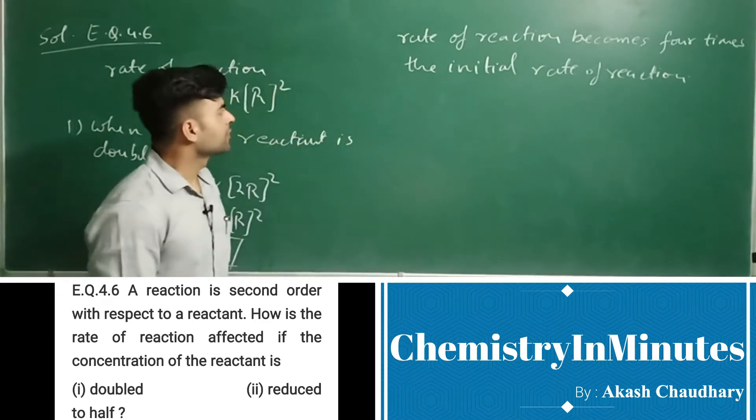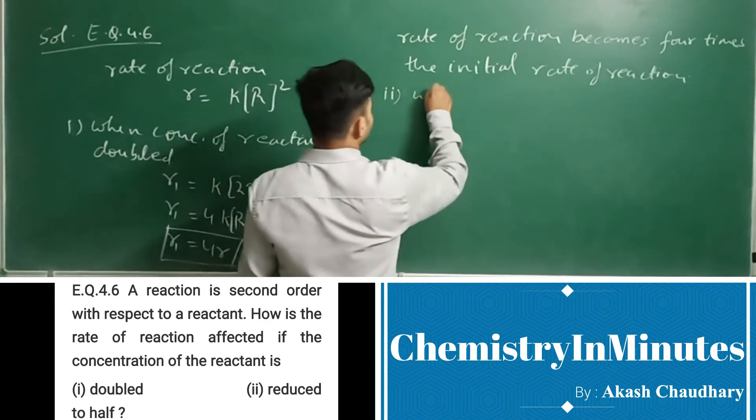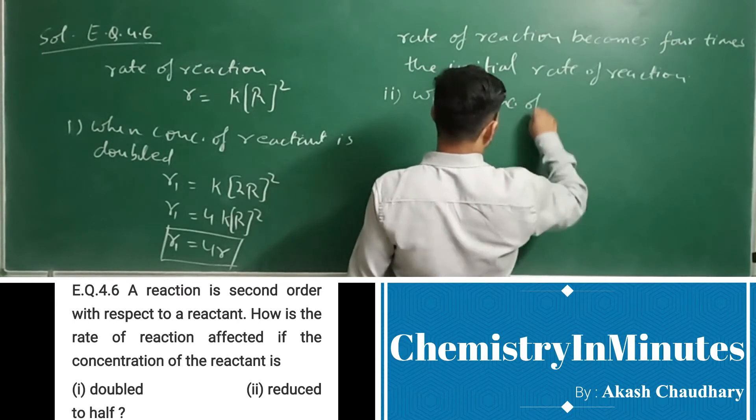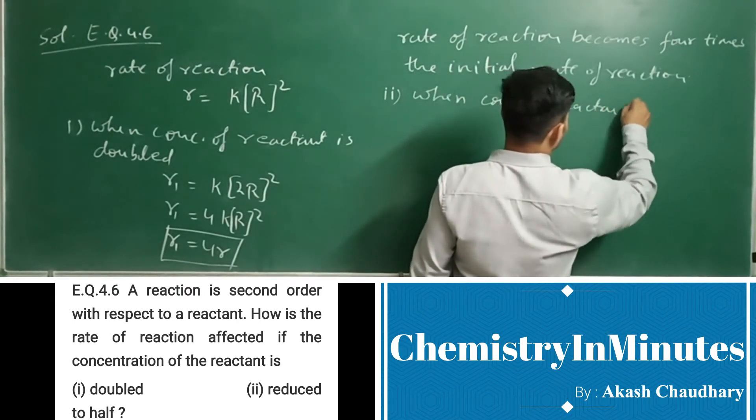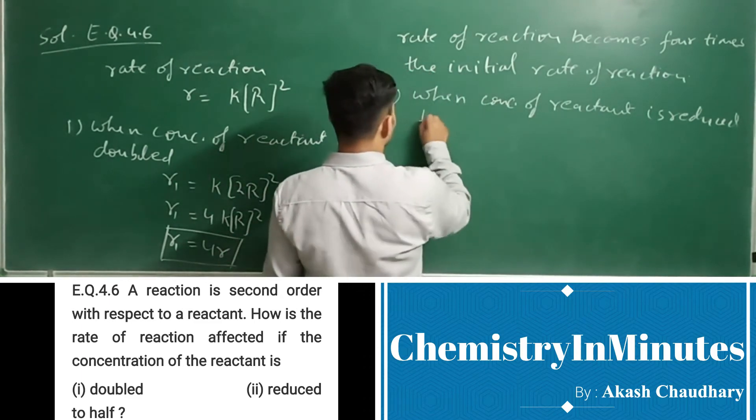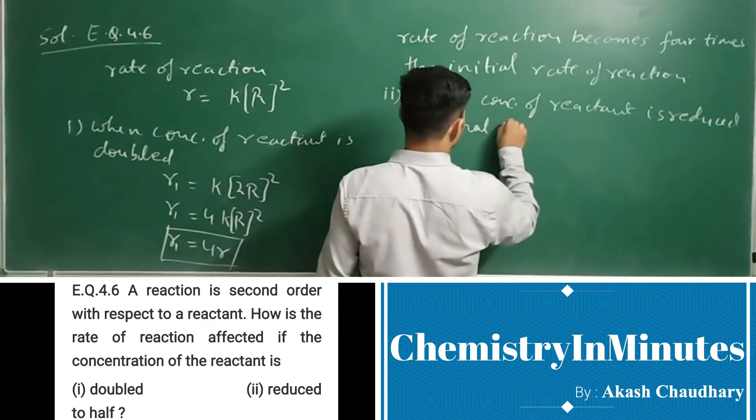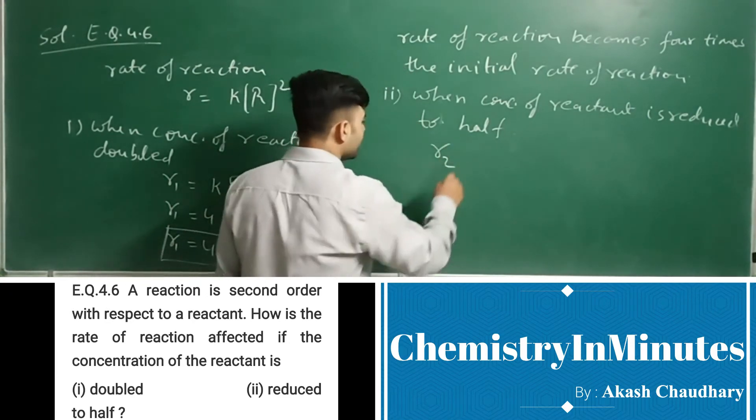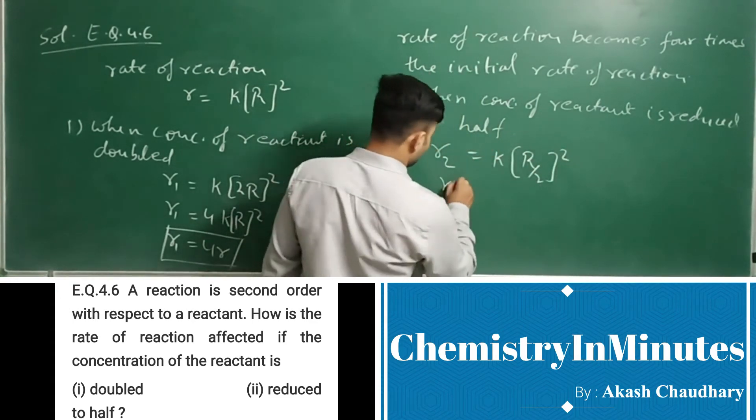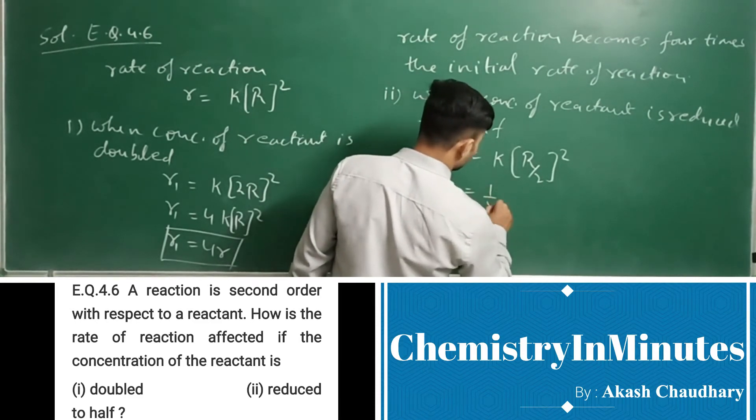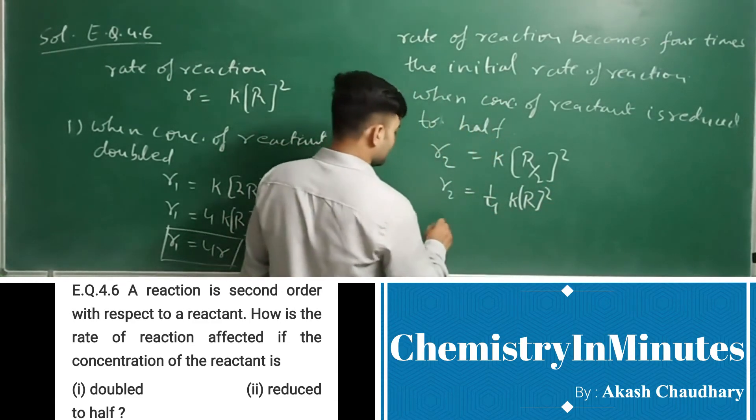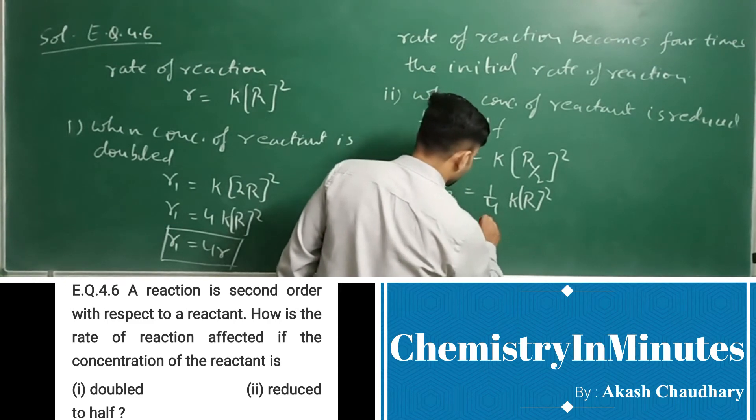Now, the second part: when concentration of reactant is reduced. So, R2 equals K times R by 2 whole square. R2 equals 1 upon 4KR square. R2 equals R by 4.